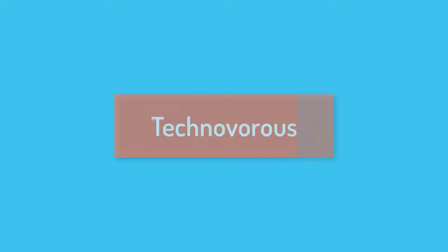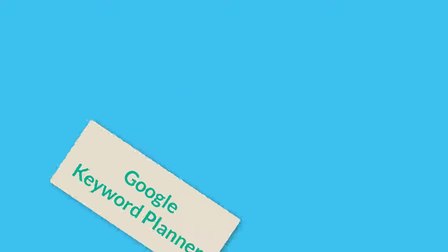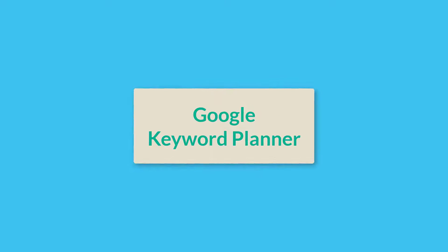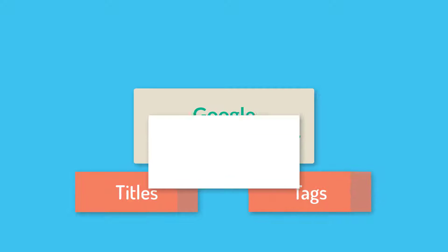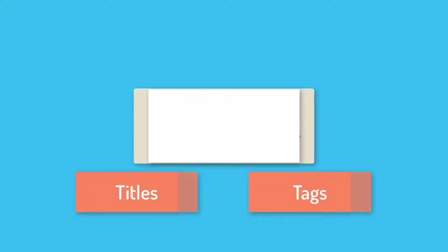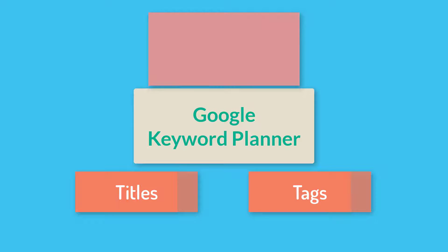Hey there, what's up? You might have known that we can get help from Google Keyword Planner to select exact keywords for titles and tags for YouTube videos, so that the video shows at the top of the search result and gets more views.